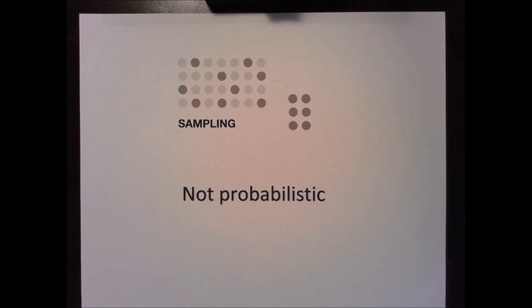First of all, remember that in the last video we talked about what statistics is and that statistics work with data. That data could be part of a population, but sometimes the population is too big or it's going to be an infinite population. So that's why it's better sometimes to work with samples. Sampling or sample is going to be just a part, a representative part of a population.